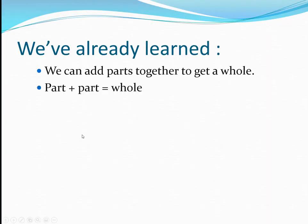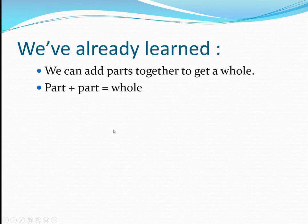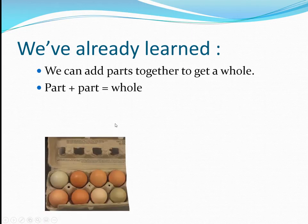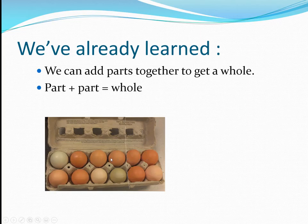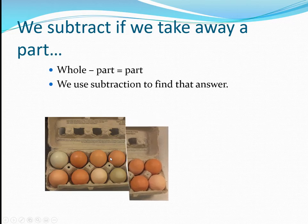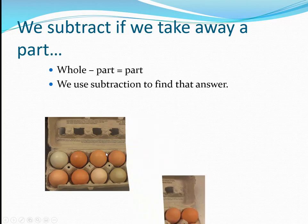We've already learned we can add parts together to get a whole. Part plus part equals whole. Eight plus four equals twelve. Four plus eight equals twelve. We subtract if we take away a part. Twelve minus four equals eight. Twelve minus eight equals four.